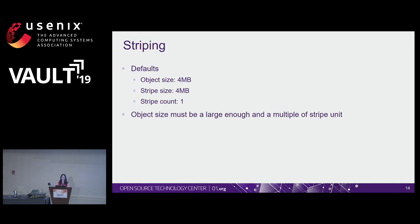Default sizes are currently 4 MB for object size and stripe size, so the stripe count is one. The object size must be at least as large as the stripe unit, or a multiple of it, to accommodate stripe units within an object. Decreasing the object size balloons the number of objects in the cluster, but it results in copying less data during operations like snapshotting and copy-on-write operations.